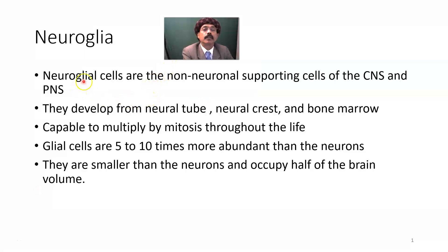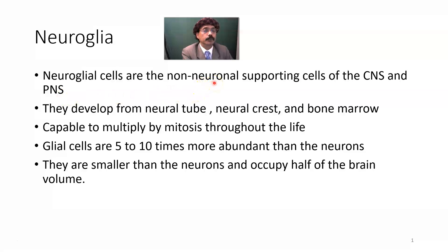What is Neuroglia? Neuroglial cells are the non-neuronal supporting cells of the central nervous system and peripheral nervous system. They are not neurons; they are supporting cells that work like connective tissue cells. They develop from the neural tube, neural crest, and bone marrow, like that of the microglia. They are capable of multiplying by mitosis throughout life, which is why their number may increase — we call this gliosis.